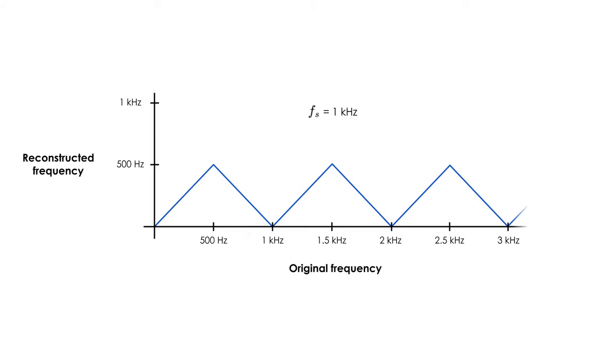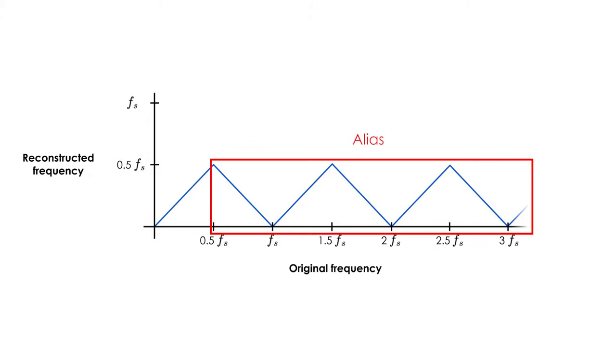We can describe all of this behavior more generally if we replace the frequencies by factors of the sampling frequency. So we can see that the only range where we can reconstruct the correct frequencies is from 0 Hz to half of our sampling rate. And after that, we have aliasing.